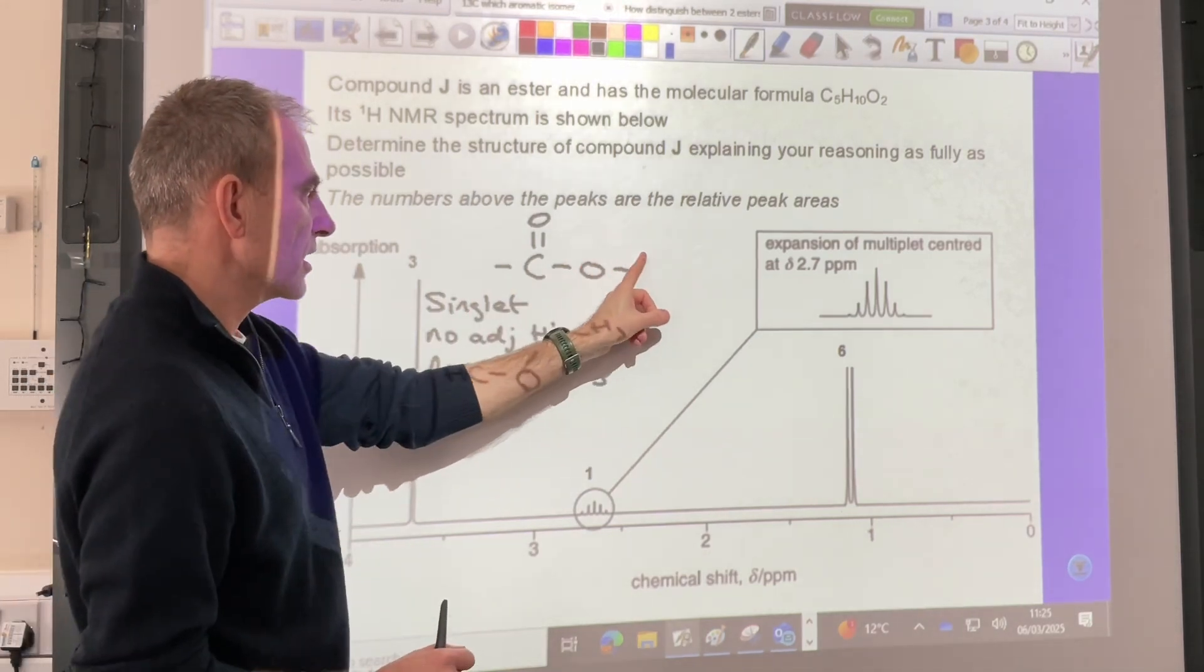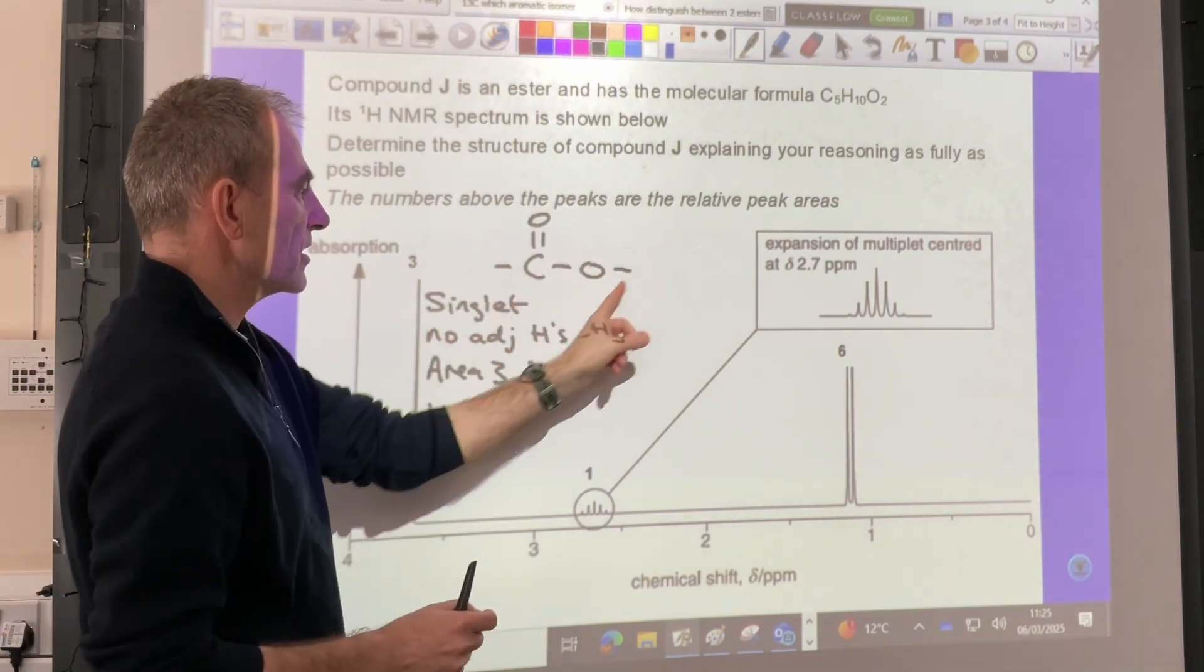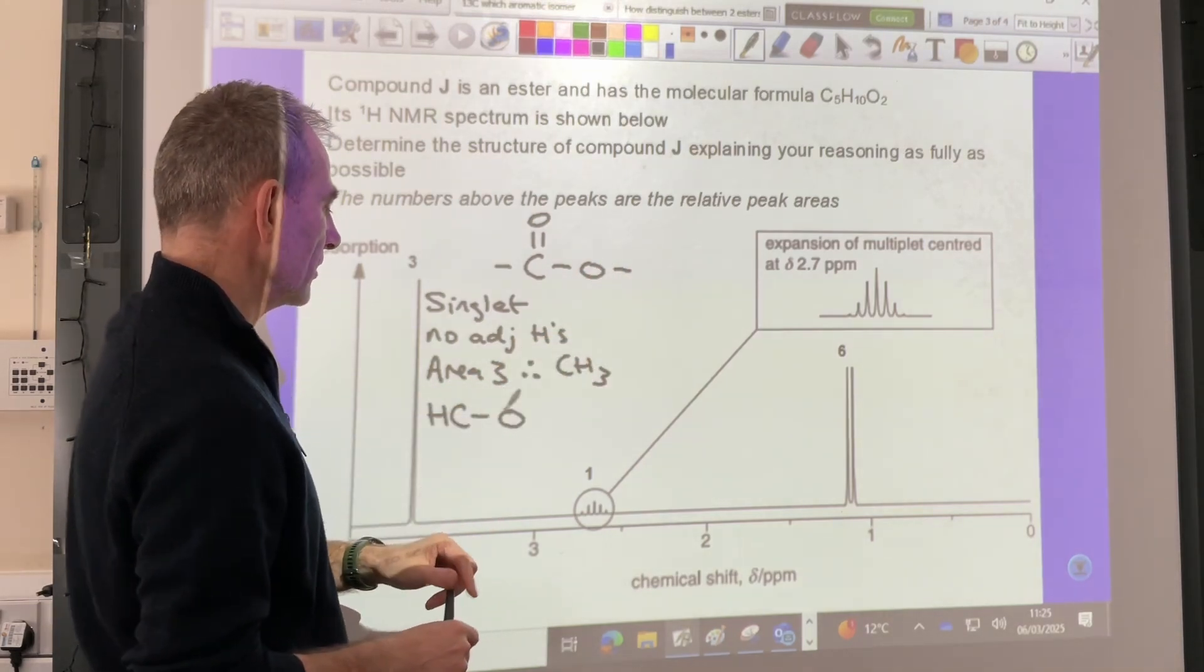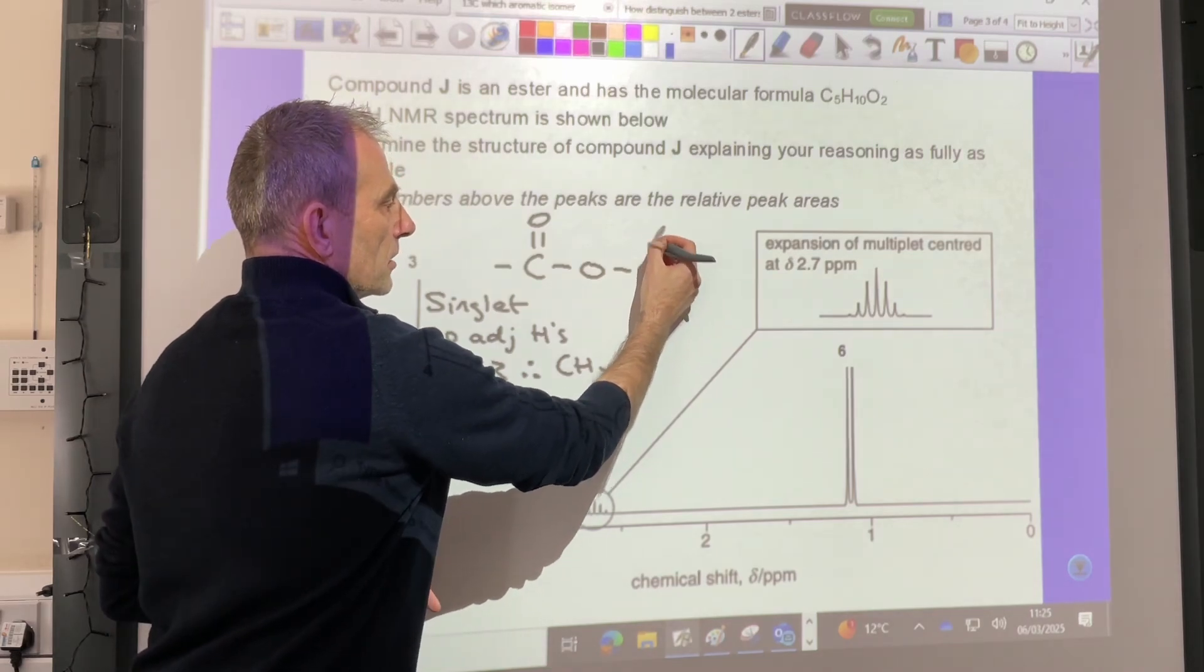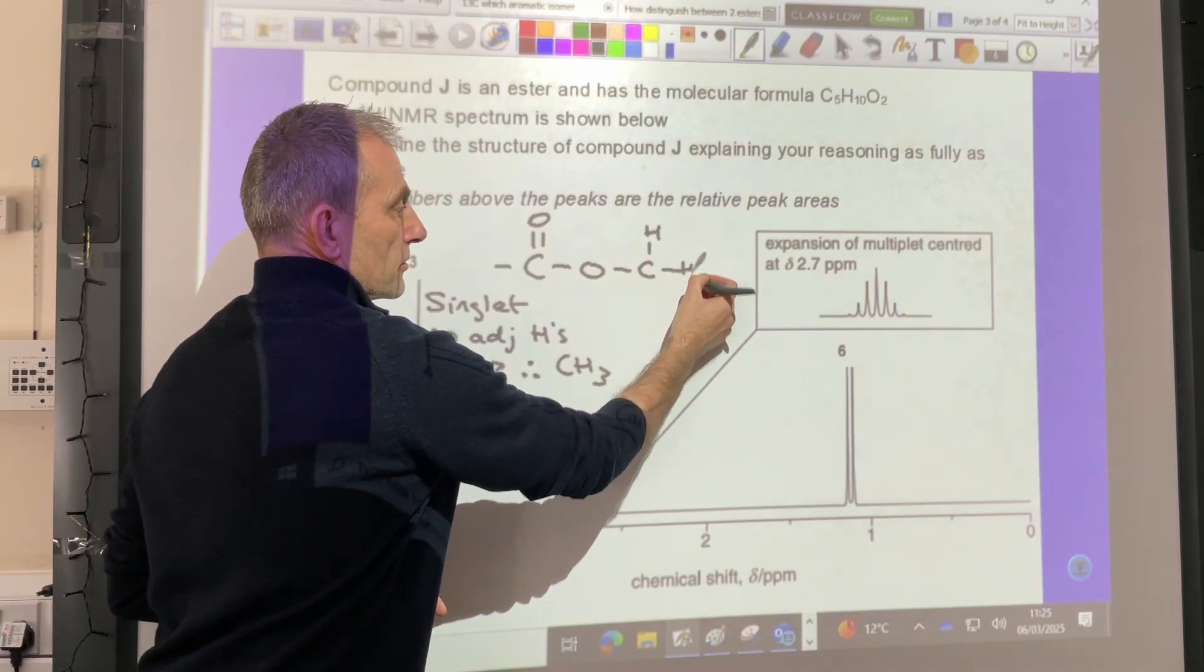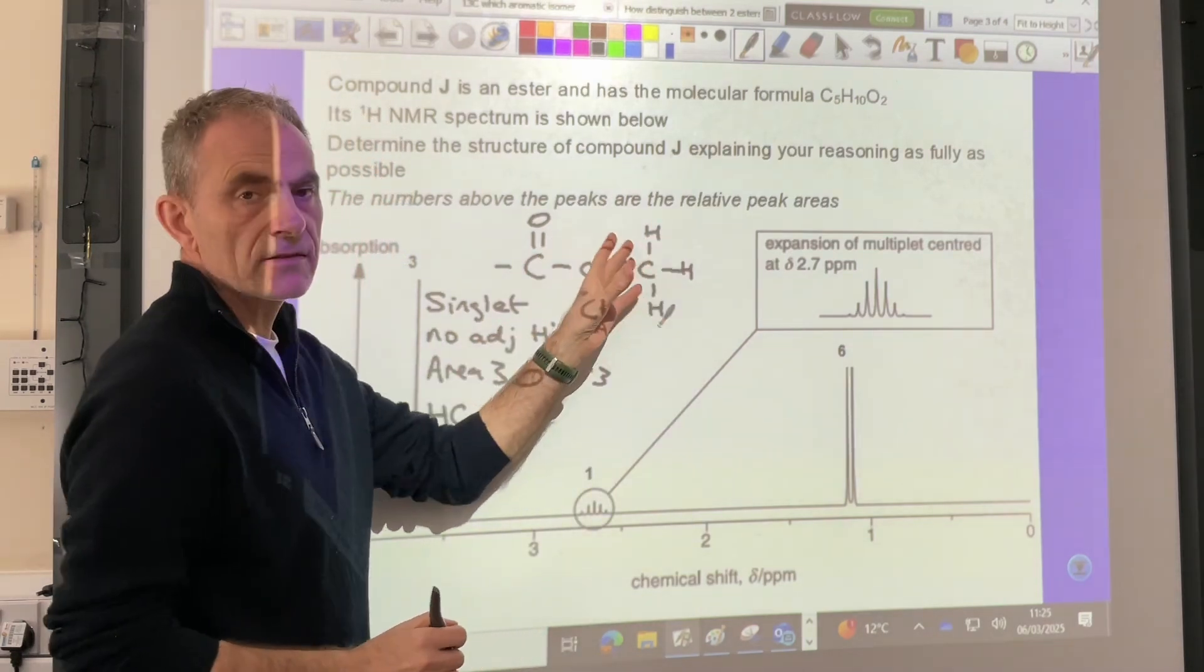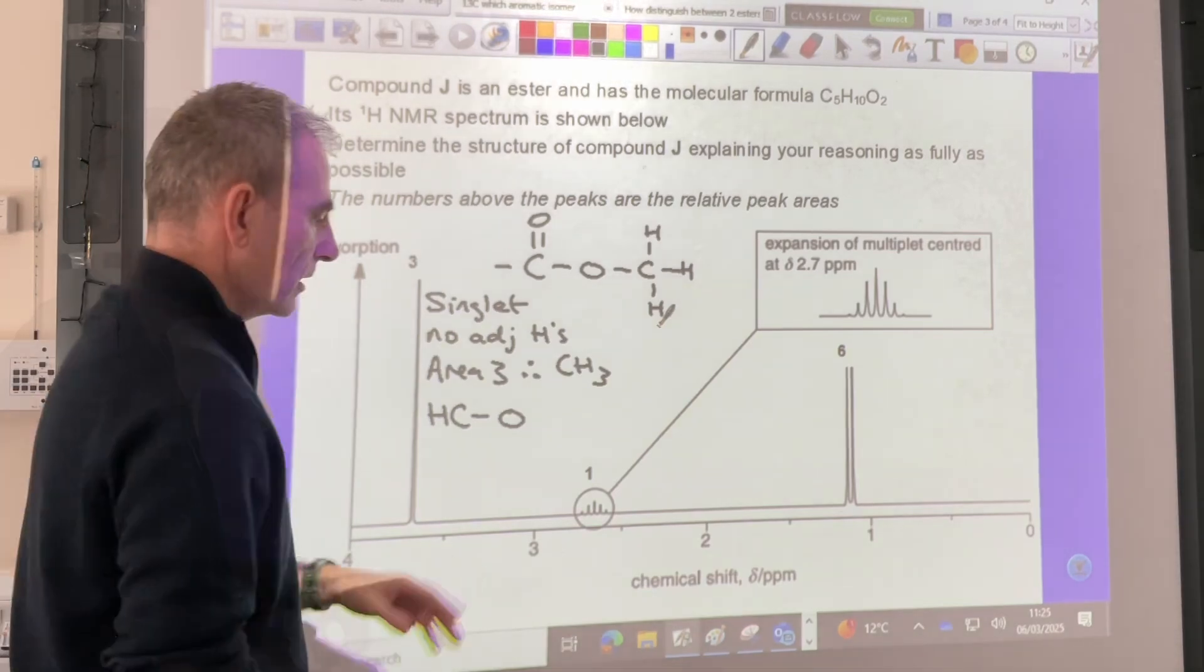So we know that these protons must be on this side, the way I've drawn the ester group. These protons must be on this side of the ester bond, so basically I know that this is a carbon with 3H, so it's a methyl group on there. So we've actually got the right hand side of this molecule sorted, because you can't put anything else on there.